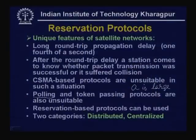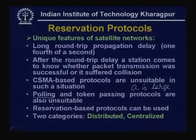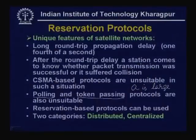Can polling be used? If polling is used, the polling signal must go from the central controller to all stations, and getting the acknowledgement back takes about two round-trip delays — about half a second — which is very large. The work time just for polling becomes very large and polling is very inefficient. Similarly, token passing is also unsuitable for satellite networks because sending a token to the next station takes at least one-quarter of a second. Neither CSMA-based nor round-robin protocols can be used in satellite networks.